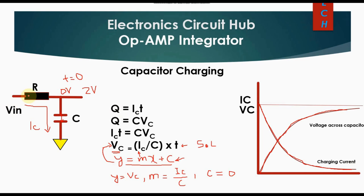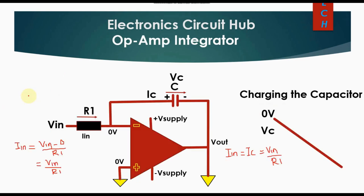This problem can be rectified using an operational amplifier. The non-inverting terminal is held at zero volts. Due to the virtual ground concept, the inverting terminal is also at zero volts. Therefore, the input current is: Iin = (Vin − 0) / R1 = Vin / R1. The voltage at the inverting terminal is always zero volts.